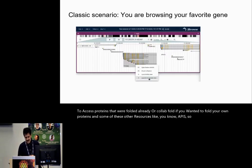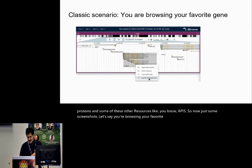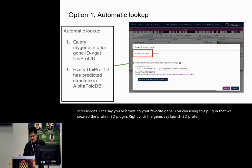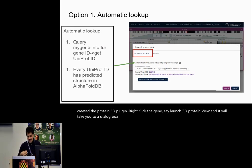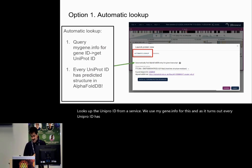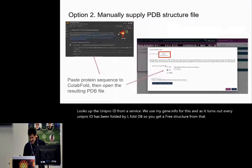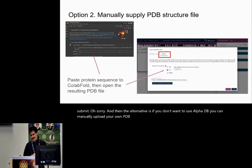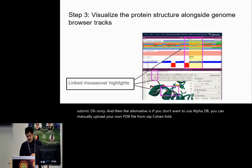Now for some screenshots. Let's say you're browsing your favorite gene — using the protein 3D plugin we created, you right-click the gene, say 'launch 3D protein view,' and it takes you to a dialog box that looks up the UniProt ID from a service we use called mygene.info. As it turns out, every UniProt ID has been folded by AlphaFold DB, so you get a free structure from that. The alternative is if you don't want to use AlphaFold DB, you can manually upload your own PDB file from, say, ColabFold.